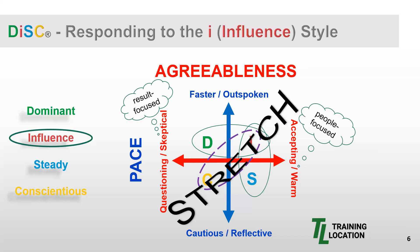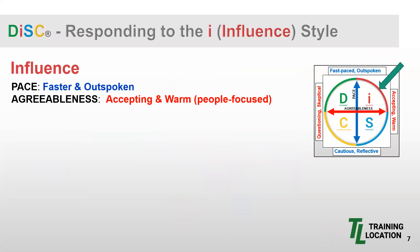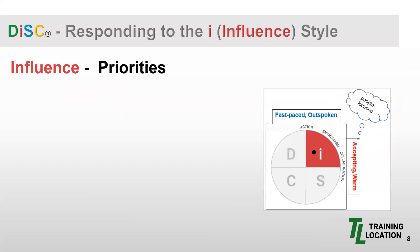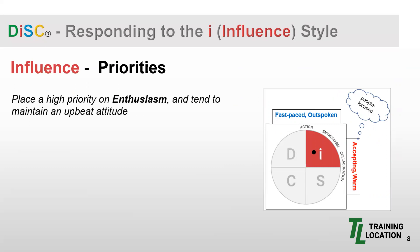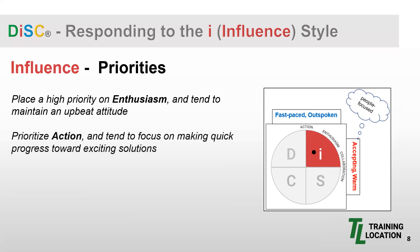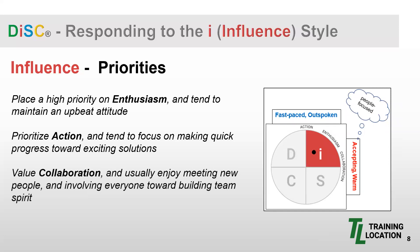Let's look at a brief list of descriptors to help you more accurately respond to the I or influence style. We already know the two continua of observable behavior indicating an I style — pace and agreeableness. Additional descriptors include: outgoing, enthusiastic, optimistic, high-spirited, and lively. From an actual DISC profile report for an I style: I's place a high priority on enthusiasm and tend to maintain an upbeat attitude; they prioritize action and focus on making quick progress toward exciting solutions; and they value collaboration, enjoy meeting new people, and involve everyone in building team spirit.